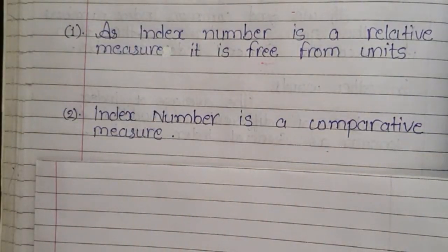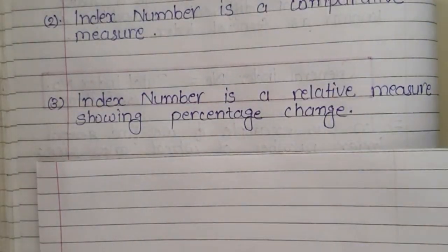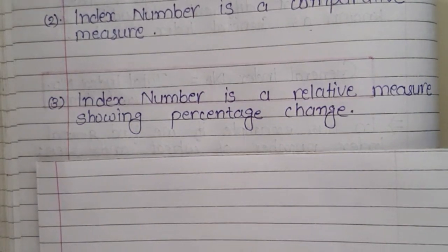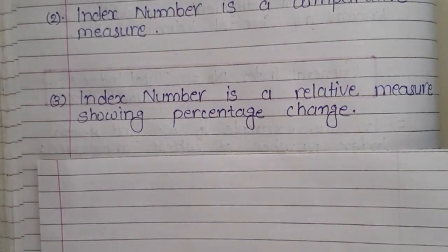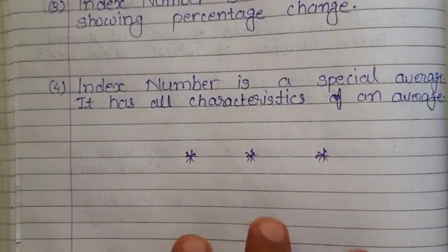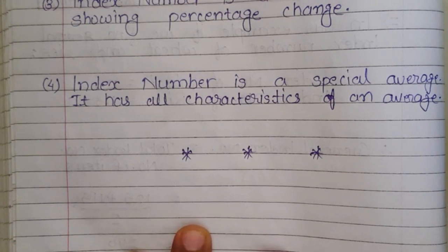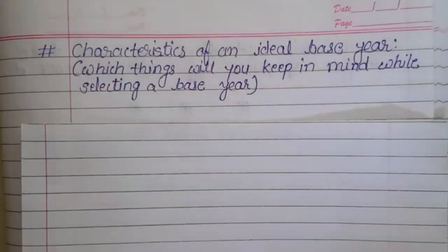The second characteristic is: index number is a comparative measure — we find index number for comparison only. The third characteristic is: index number is a relative measure showing percentage change. As already discussed, percentage change in price relative is called index number. The fourth characteristic is: index number is a special average — it has all characteristics of an average. General index number is found with the help of average only, so it possesses all the characteristics of an average.